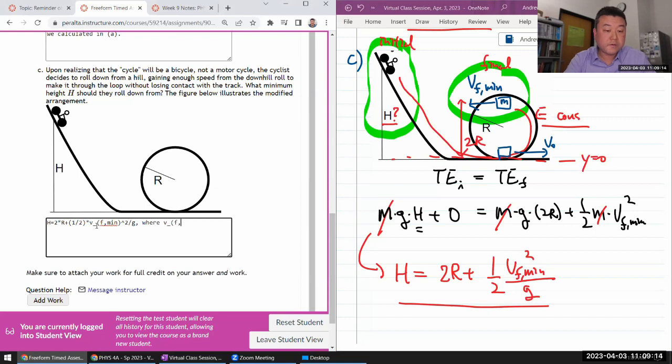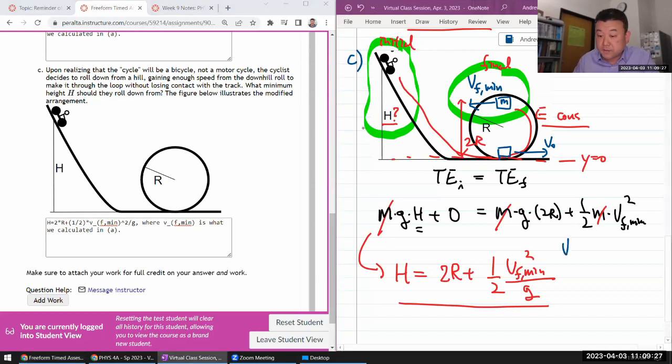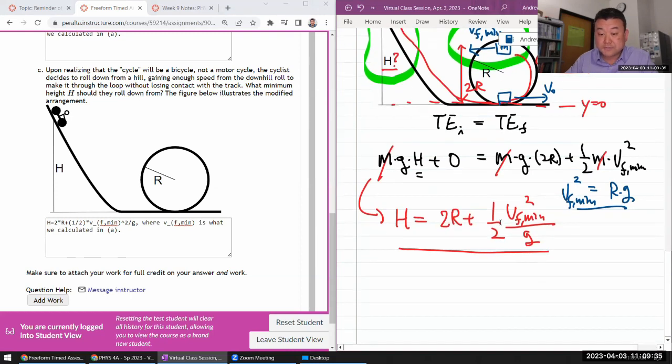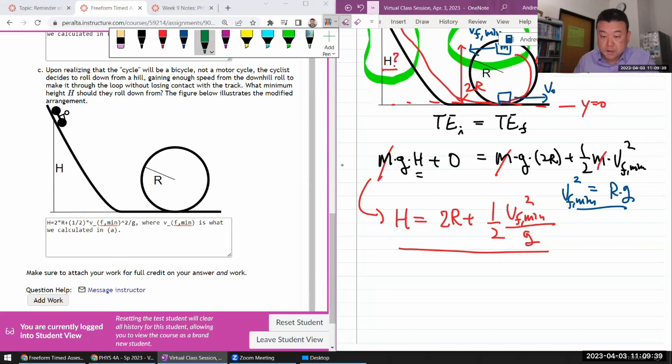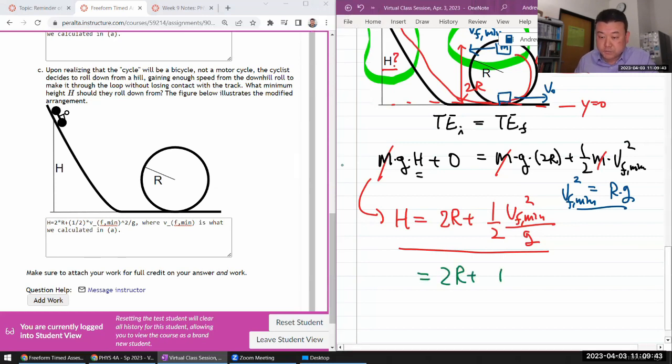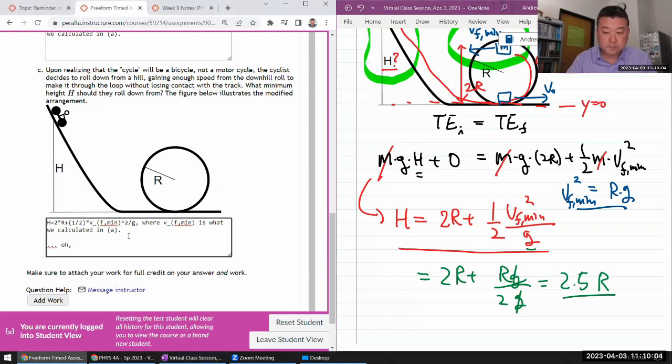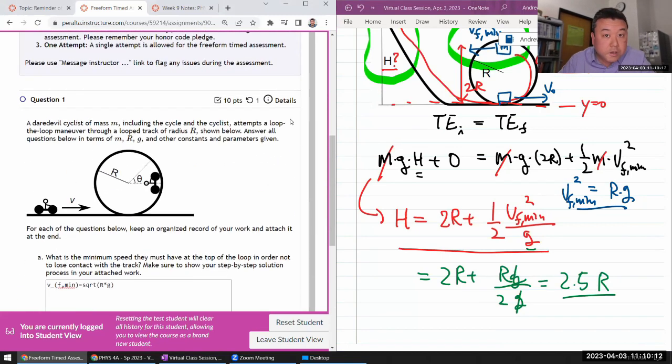Where v final min is what we calculated in a. Now, as you've seen before, if I plug in the actual expression for v final min, I think I have it memorized now. Square of that is r times g. So when you plug that in, it actually gets a lot simpler. h becomes 2r plus rg. That's the squared quantity divided by 2g. g is cancelled. So 2 plus 1 half. Then let me write it down as 2.5. This is a much simpler expression. Doesn't have any dependence on g. So let me just put it up. h is equal to 2.5 times r. Good. So I think that's all the parts.